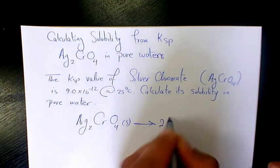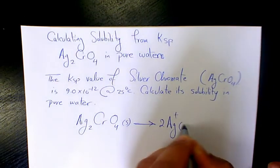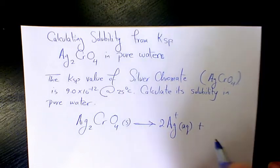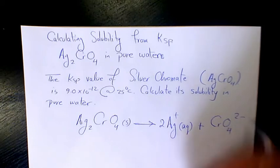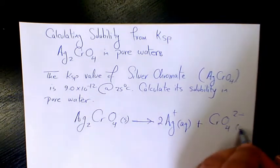That's going to make 2 Ag+ in aqueous phase plus CrO4 2- in aqueous phase.